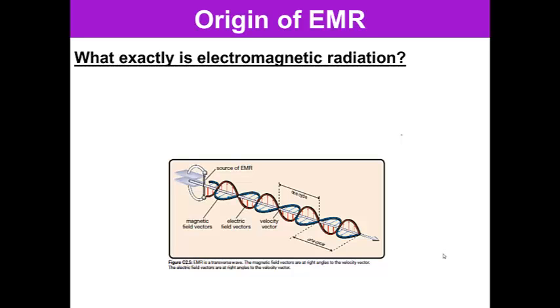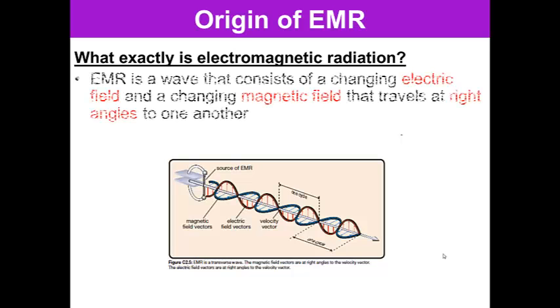What are the origins of electromagnetic radiation? So what is it exactly? Electromagnetic radiation is a wave that consists of a changing electric field and a changing magnetic field. This travels at right angles to one another. So you can see in the figure below, you have a magnetic field vector and an electric field vector, and they are at 90 degree angles to each other.